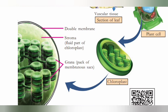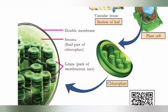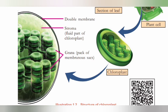The chloroplast has a double membrane. What is a double membrane? It is a double membrane surrounding the organelle. Inside, there is a fluid part — a light green colored fluid. That fluid is called stroma. The fluid part of the chloroplast structure is called stroma.